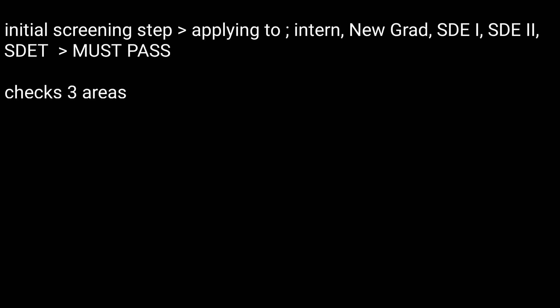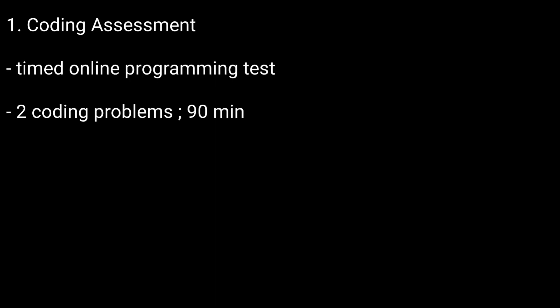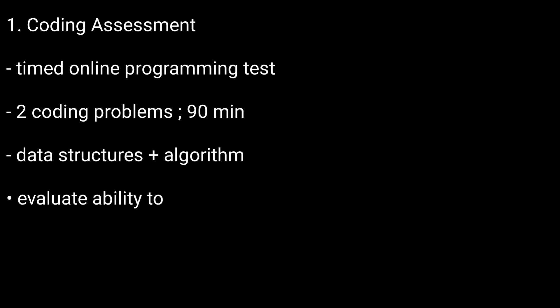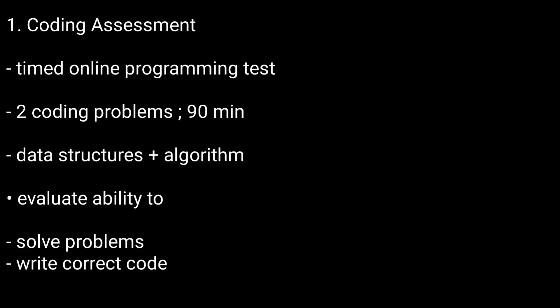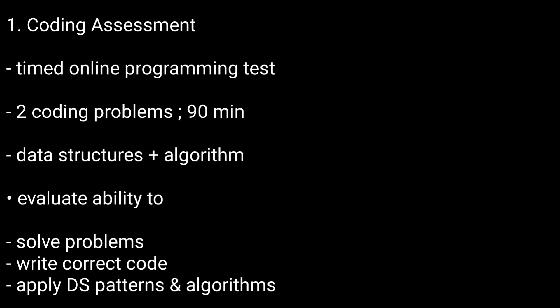The test checks three areas. First, the coding assessment: a timed online programming test with two coding problems limited to 90 minutes. These involve mainly basic data structures and algorithm problems at an easy to medium level. Amazon is interested in evaluating your ability to solve problems, write correct code, and apply data structure patterns and algorithms.